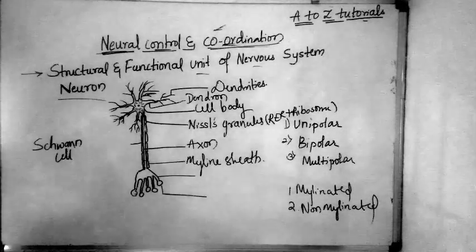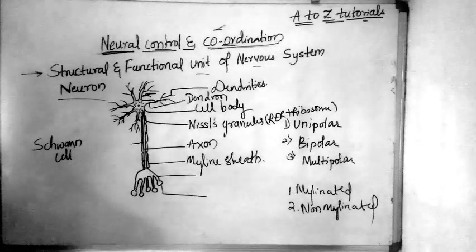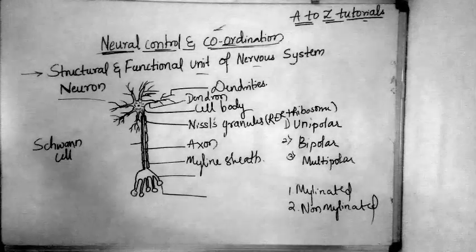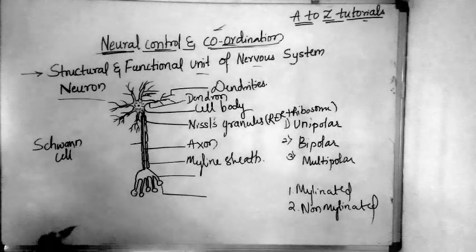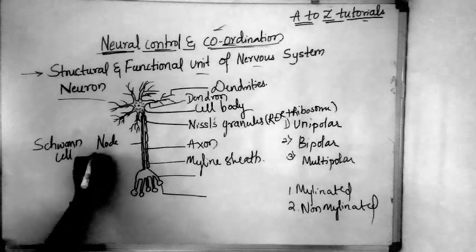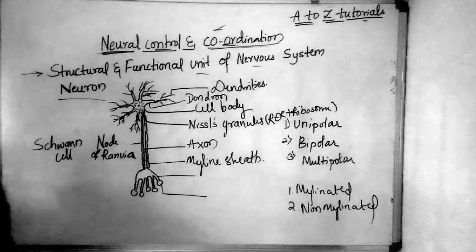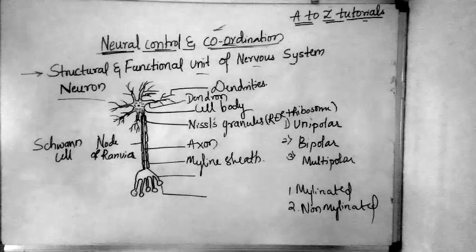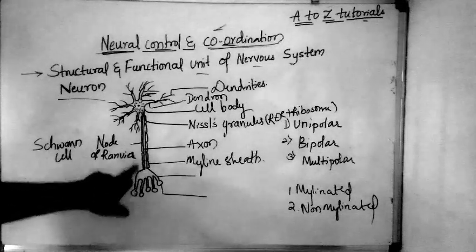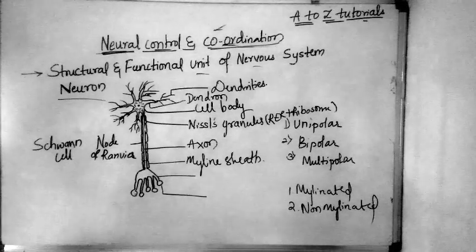In between two adjacent myelin sheaths there is a gap, or a node. We call this the Node of Ranvier — it is the gap between two adjacent myelin sheaths.